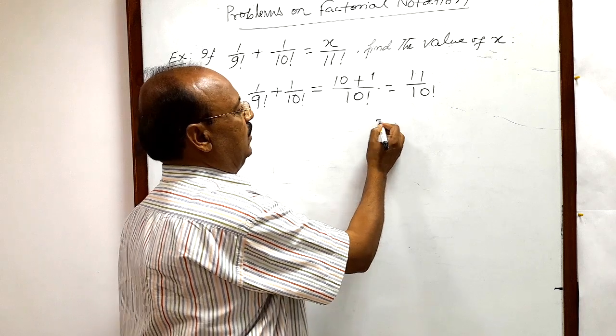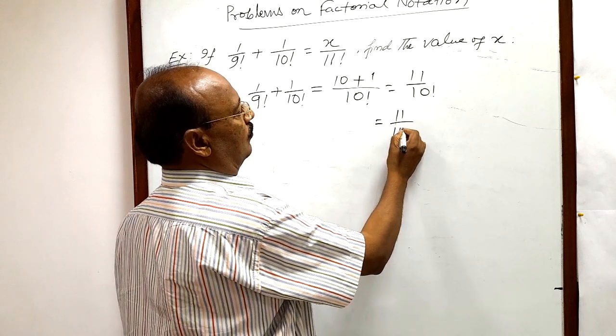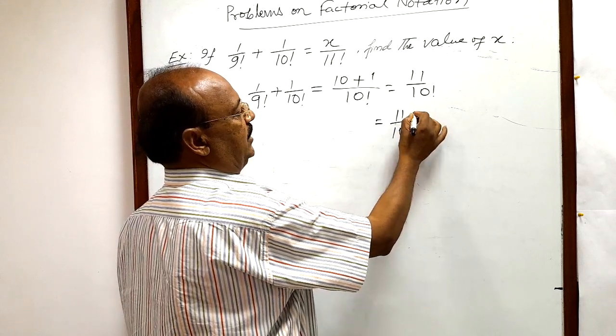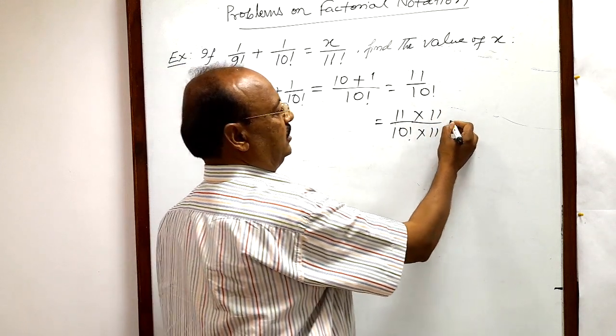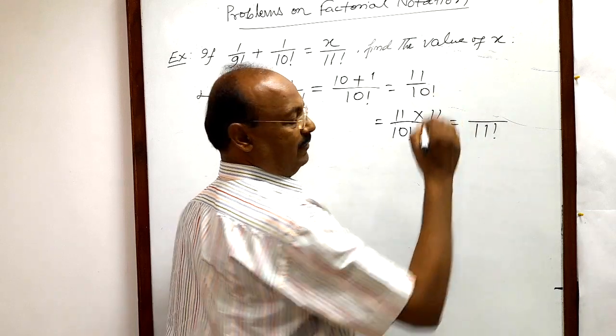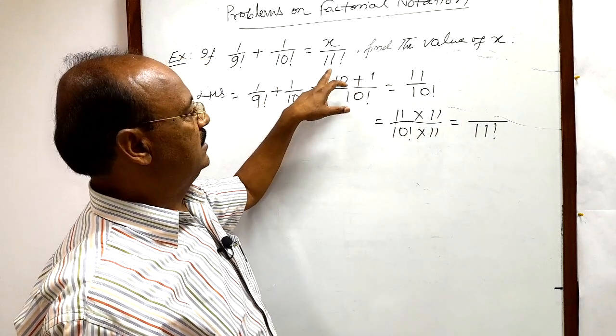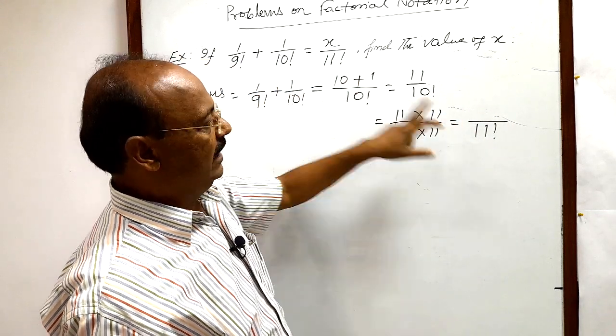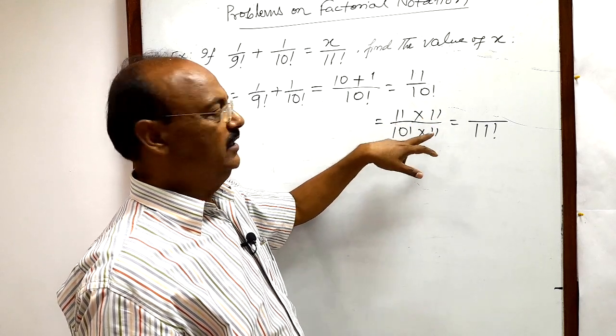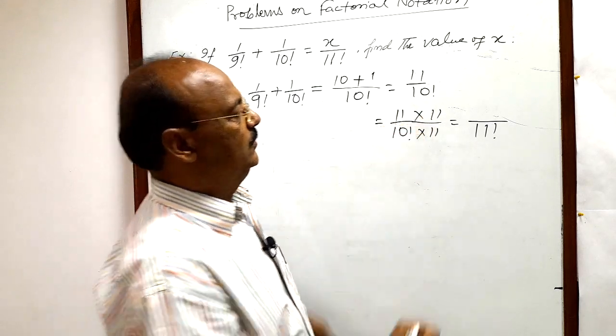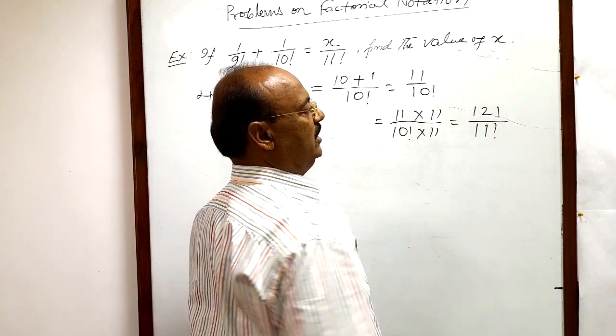We can multiply numerator and denominator by 11, so that denominator becomes 11 factorial. 11 factorial is here, so we have to bring this value here after multiplying numerator and denominator both by 11, and numerator is 121.